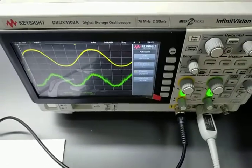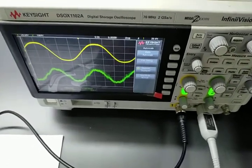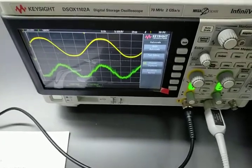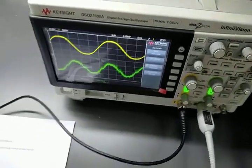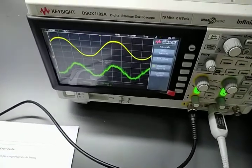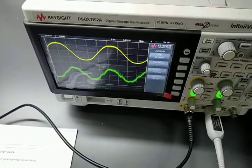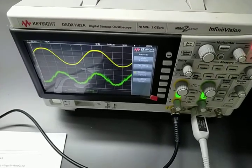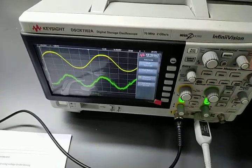The formula of gain is Vout upon Vin, so our gain will be approximately equal to 1. This is our emitter follower experiment. Thank you.